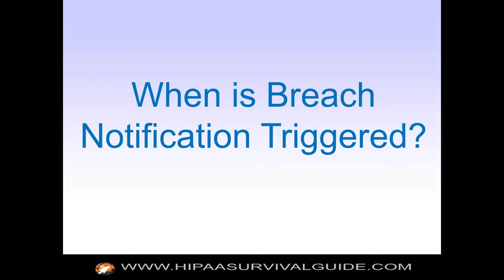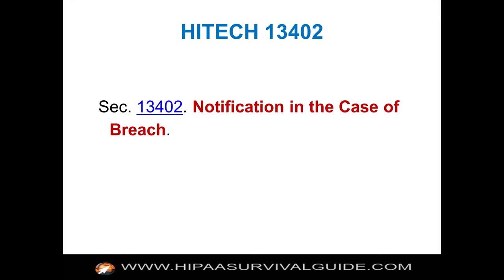Question number one: when is breach notification triggered? Breach notification was introduced by the HITECH Act, which has been in effect since 2009. The clock started ticking on breach notification since 2009, and the interim rules have been out there a long time. The omnibus rule did not trigger the notification rules — they had already been triggered. The omnibus rule did give grace periods for some BAA agreements, but it didn't trigger breach notification.